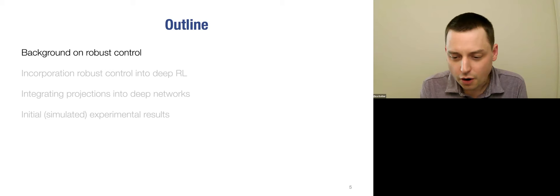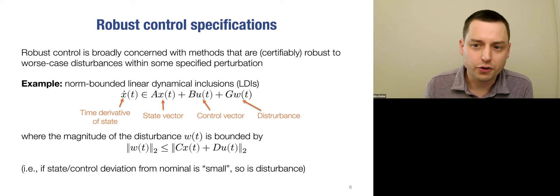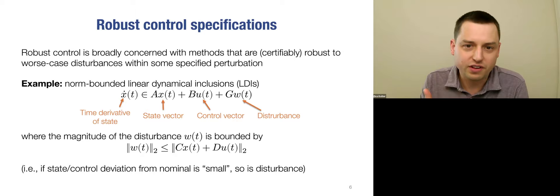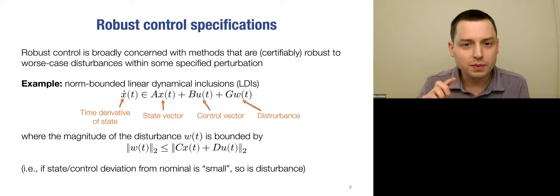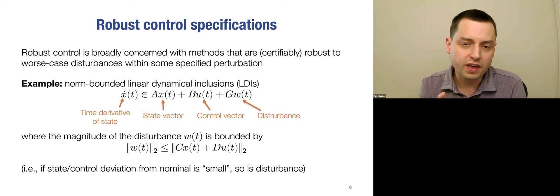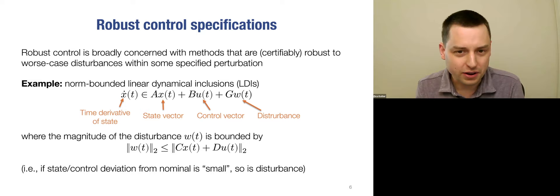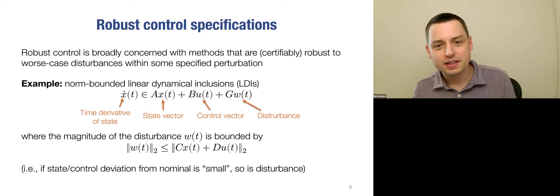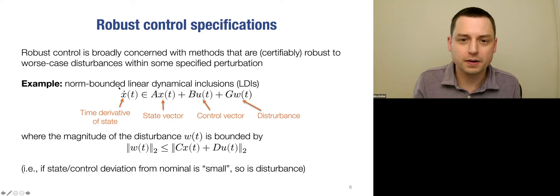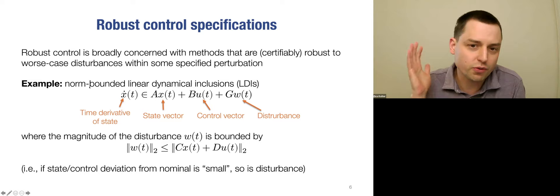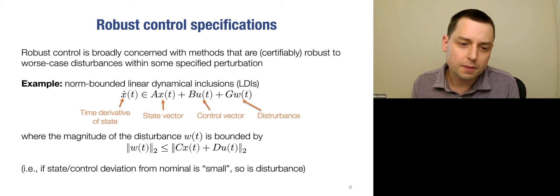Let me give background on the robust control domains I'm talking about. The form of robust control I'm concerned with looks at controllers that are certifiably robust to worst-case disturbances within some valid class. A classical example is norm-bounded linear dynamical inclusions, or LDIs. Even though the term 'linear' is a bit misleading, this can cover non-linear systems where we can bound the non-linearity or allowable disturbances within a set described by a linear system.